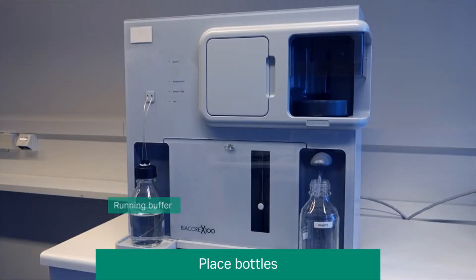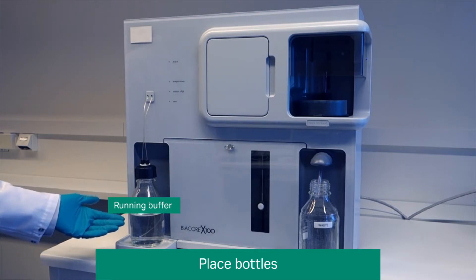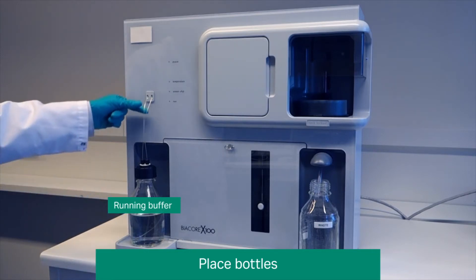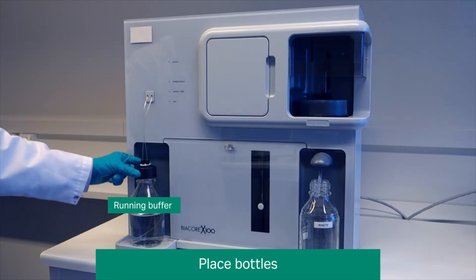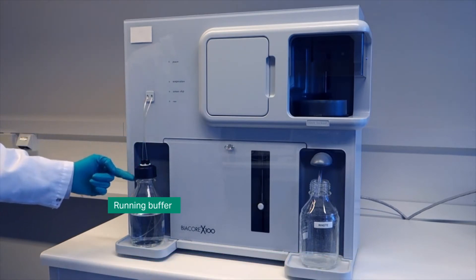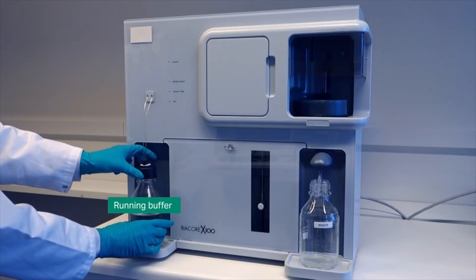Place a filled bottle of running buffer on the left hand tray. Ensure that both buffer tubes are inserted through the cap and into the bottle and the tubes sit at the bottom of the bottle.